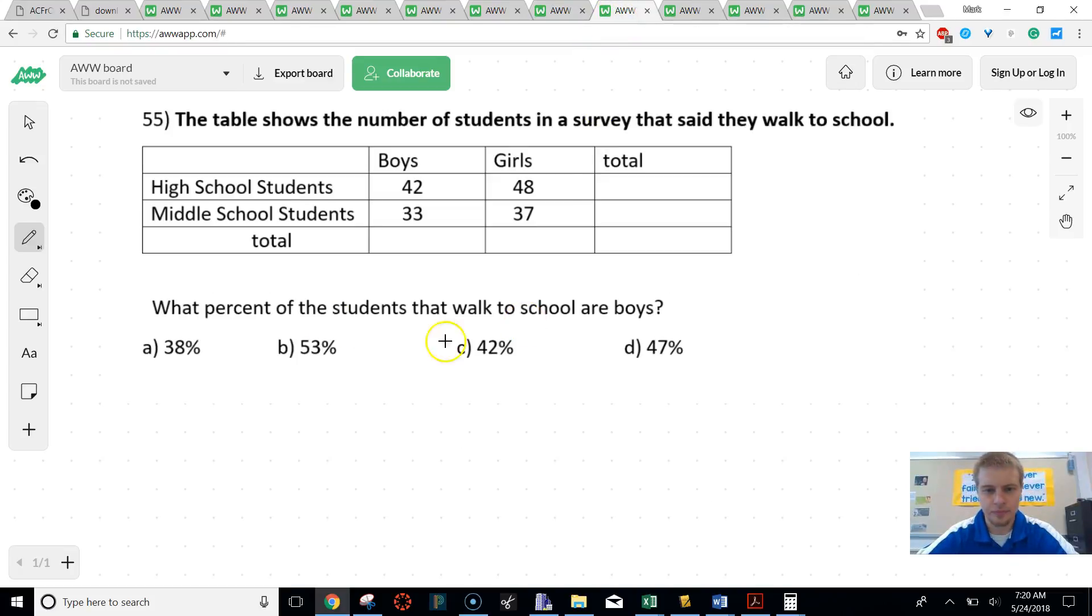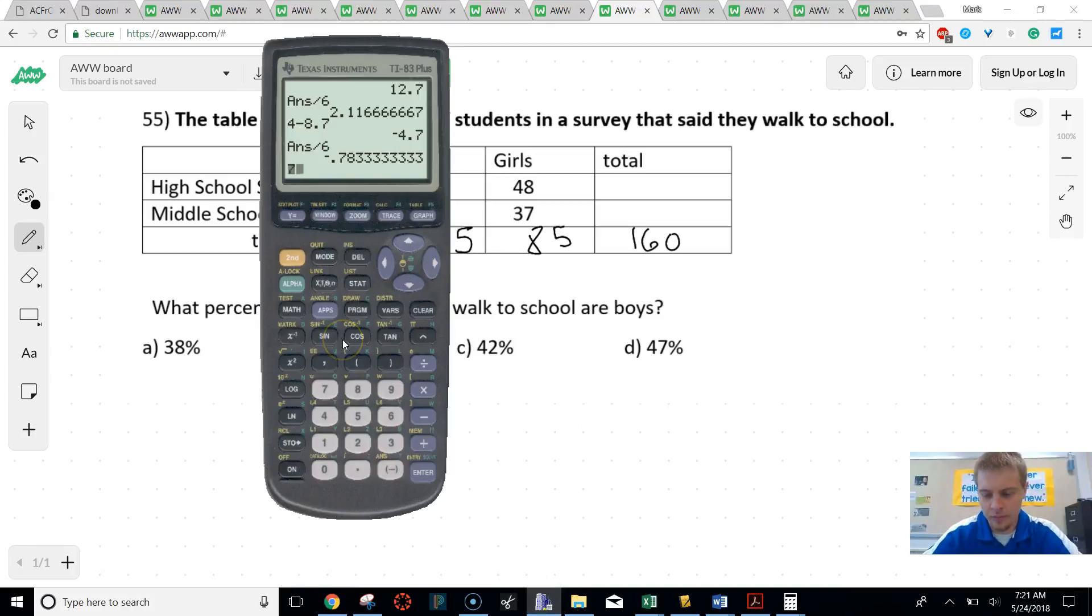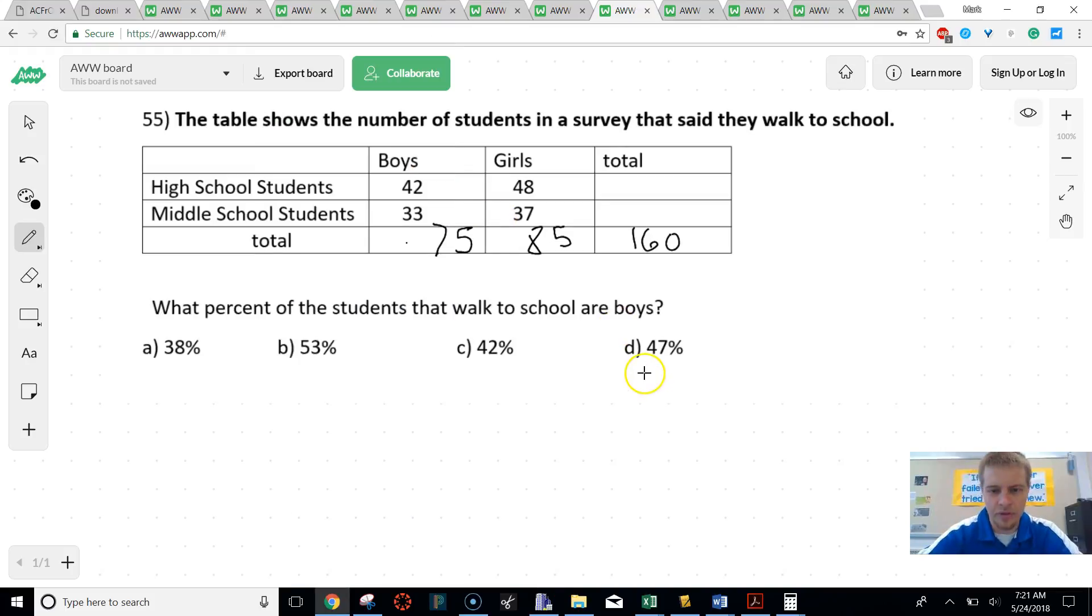Let's go to our next one. This one's the what percentage of students that walk to school are boys. So all these people walk to school. So it would be nice to know the total number of students, and it would be nice to know the total number of boys. So I can do that quickly. There's 75 boys, and there's 85 girls, so there would be 160 students in total. You could do the same thing over here, but I don't really need those pieces of information. So I need to find how many total percent of boys walk, so that would be 75 over 160 or about 47 percent.